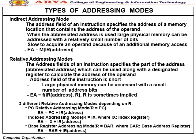Relative addressing modes — the address field specifies part of the address used with a designated register to calculate the effective address. A short address field can access large physical memory. Types: PC-relative (R = PC); Index addressing (EA = IX + IR); Base register addressing (R = BAR, EA = BAR + IR).